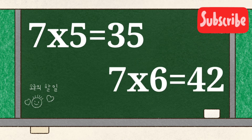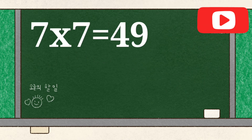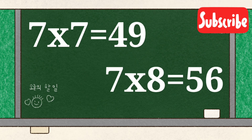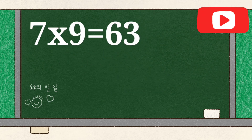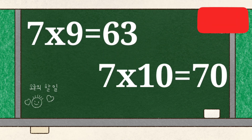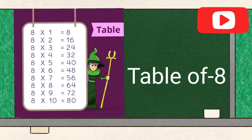7 6's are 42, 7 7's are 49, 7 8's are 56, 7 9's are 63, 7 10's are 70. Table of 8.